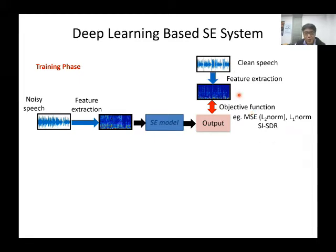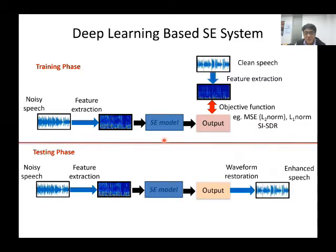Usually we can use L1 norm or L2 norm, that is MAE or MSE, to measure the difference. Based on the difference, we then update the parameters of the speech enhancement model. In the testing phase, the noisy speech waveforms are first converted to spectral features. Then the trained speech enhancement model transforms the noisy spectral features to generate the enhanced ones. By a waveform reconstruction process, we can then obtain the enhanced speech waveform.